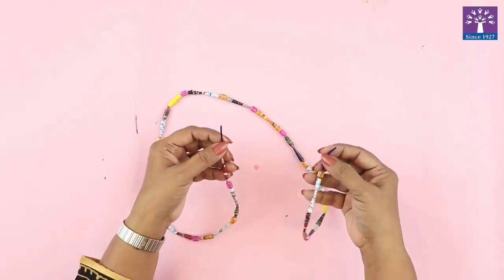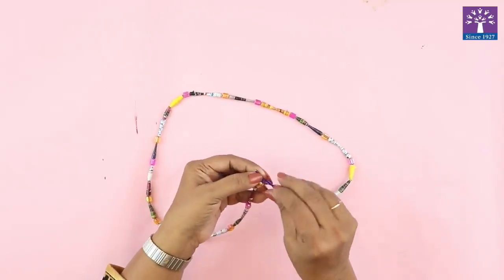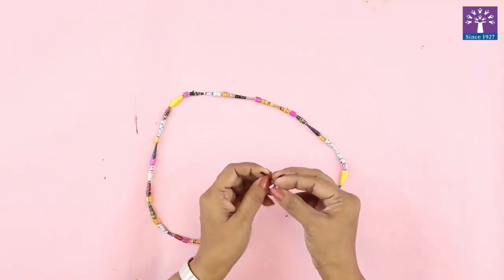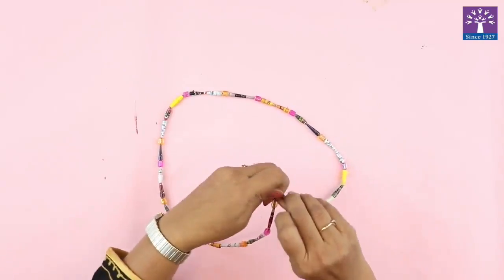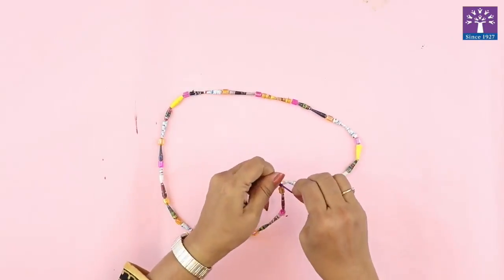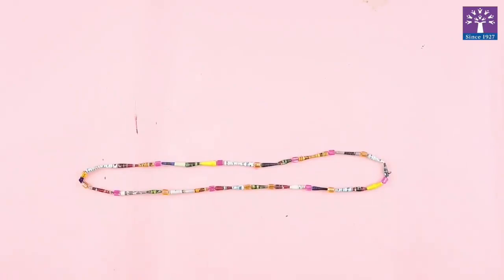We will knot the end. Secure this with double knot. Paper bead necklace is now ready.